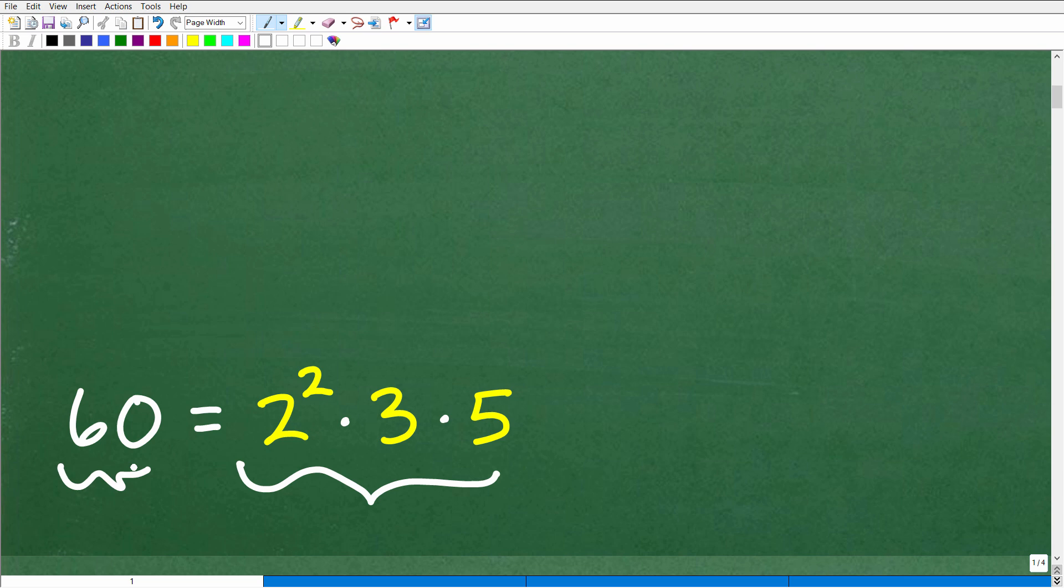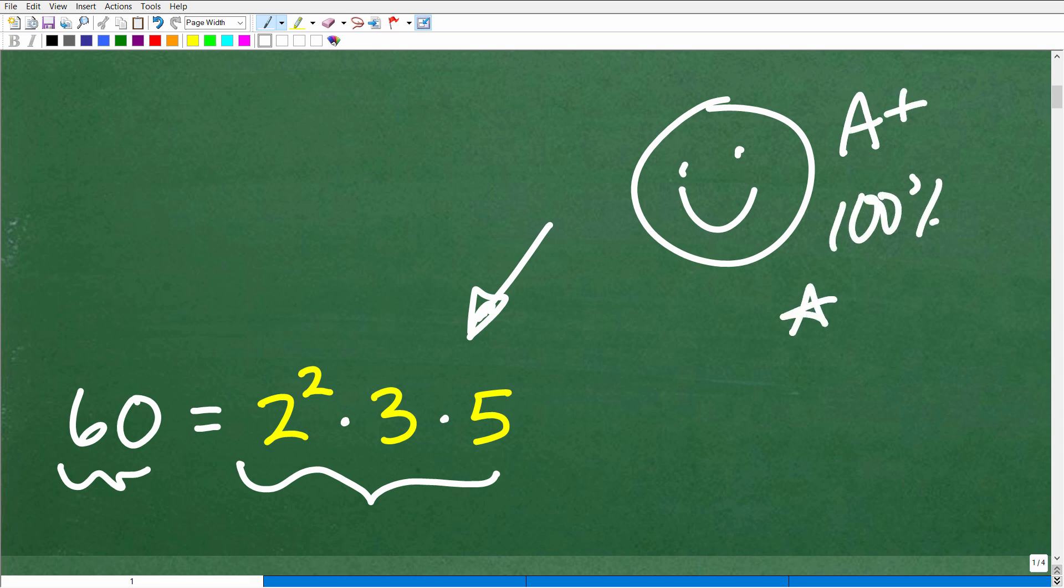And you kind of hopefully pick up the idea that prime factors means we're talking about prime numbers. Yes, indeed we are. I'm going to get into what a factor is and how to find prime factors using a factor tree in just one second. But if you got this right, let's give you a nice happy face and a plus 100% and a few stars so you can tell your friends and family that you know exactly how to find the prime factors of a number using a factor tree.